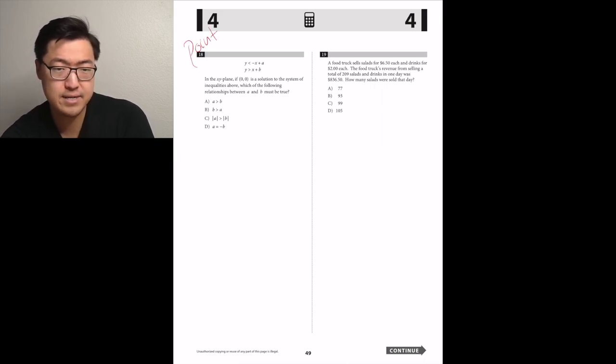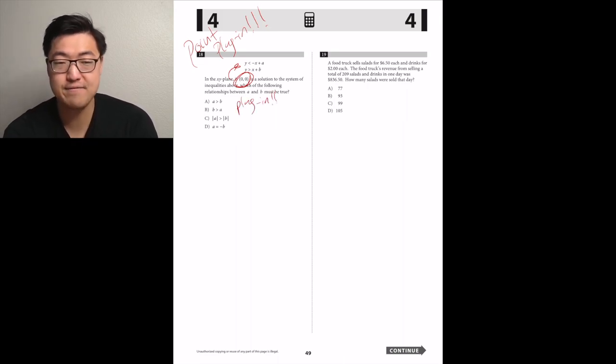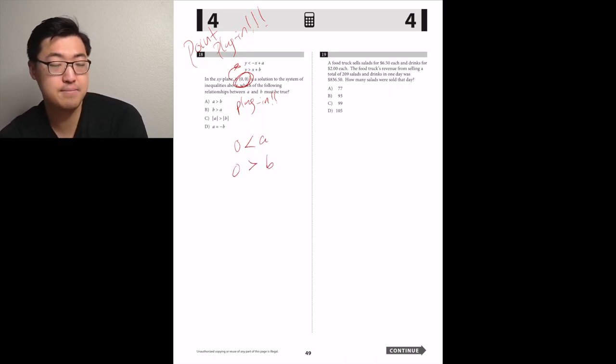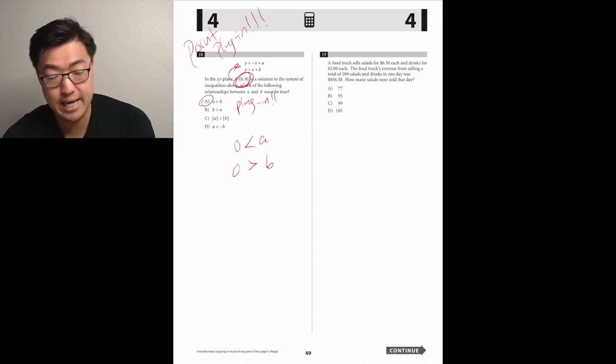Number 18. In the xy-plane, if 0, 0 is a solution to the system of inequalities above, which of the following relationships between a and b must be true? This question might look a little crazy, but to our well-trained SAT eyes, we see that they've given us a point and they've given us equations. This makes this point plug-in. Let's plug the point into the equations and see what we get. 0, 0 being substituted in for x and y in the top equation gives us 0 is less than a. So a is like positive. 0, 0 being substituted into the second equation gives us 0 is greater than b. So b is negative. So a.